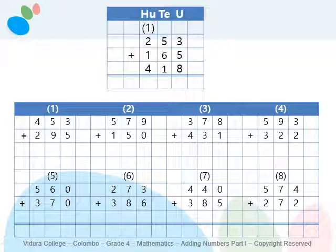It's time to check your answers. For the first sum, add four hundred and fifty-three and two hundred and ninety-five. Start from units: three plus five equals eight. Then tens: five plus nine equals fourteen — a double-digit number. Write four under tens and carry one to hundreds. One plus four plus two equals seven. The final answer is seven hundred and forty-eight.